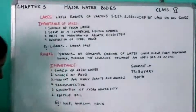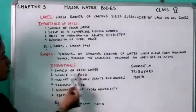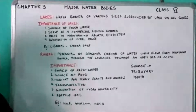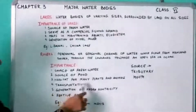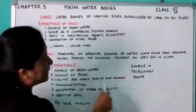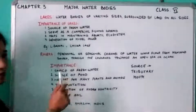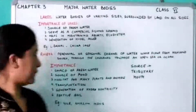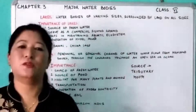The importance of rivers: number one, they are a source of fresh water required for all activities. Number two, they are a source of food — we get fish. Number three, they are a habitat for many aquatic plants and animals. Number four, they enable transportation for trade. Number five, they help in the generation of hydroelectricity. Number six, rivers deposit fertile soil, which is ideal for the cultivation of crops. Examples of rivers include the Nile, Amazon, Indus, and Ganga.